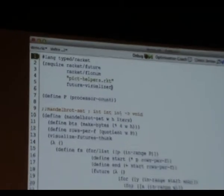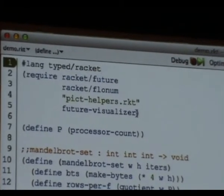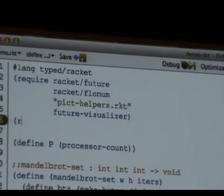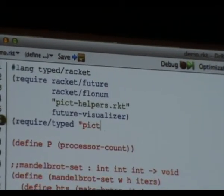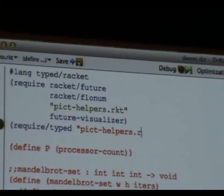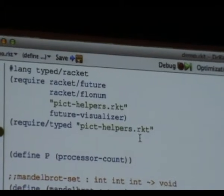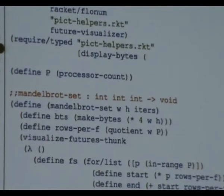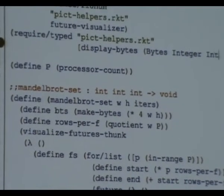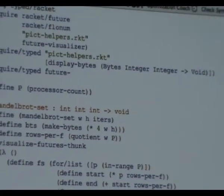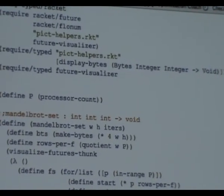First of all, we have to, some of the modules that we're requiring here are also untyped. So, we have to tell typed Racket what the signatures of these functions are. So, the way we do that is we say, require types. So, first of all, pict helpers is a helper module that defines this function display bytes here. And that's just what converts the byte array to an actual bitmap and shows a window of the bitmap. So, the type of that function, this function takes a byte array, two integers, and returns void.